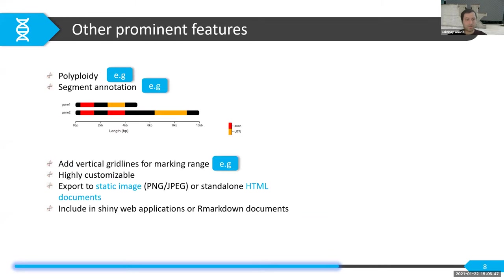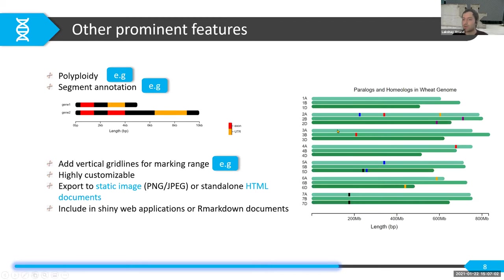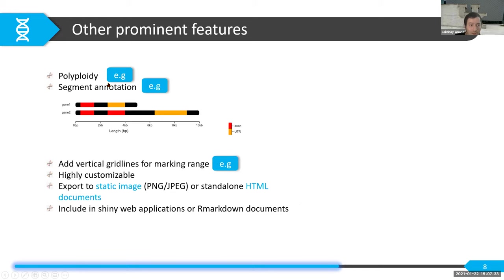Another prominent feature is polyploidy support — you can pass different sets of chromosomes, each with different sizes and numbers, as seen in this wheat genome example showing all homeologous chromosomes. Each ploidy is independent and can have its own data — you could also use different species for comparative genomics. Segment annotation allows you to annotate gene structure — for example, comparing splice variants of genes. You can also add vertical lines to mark specific genomic regions of interest.